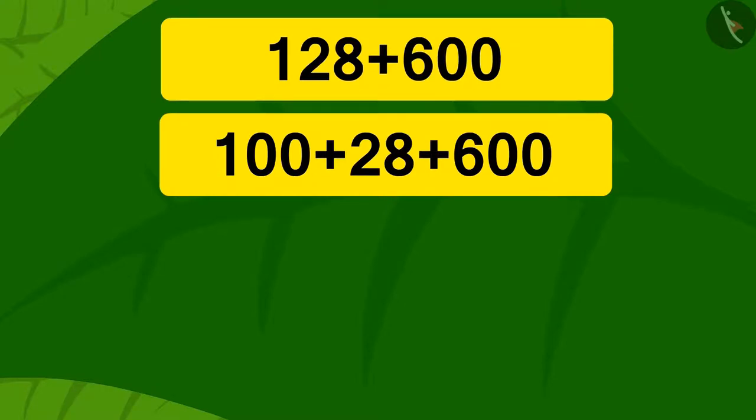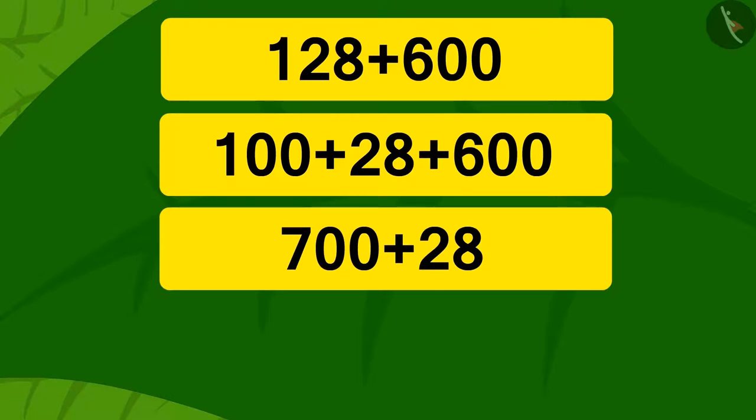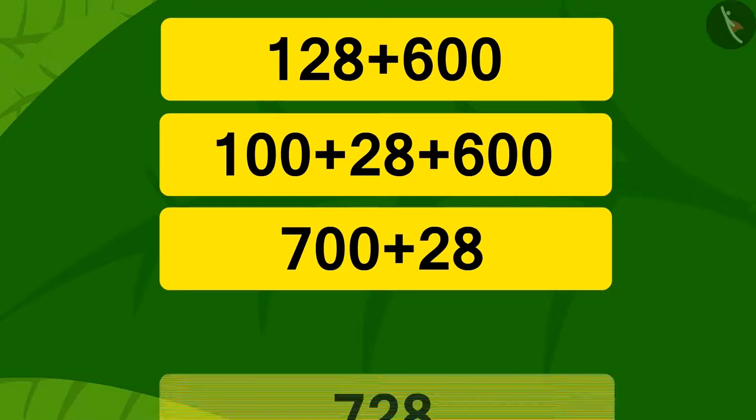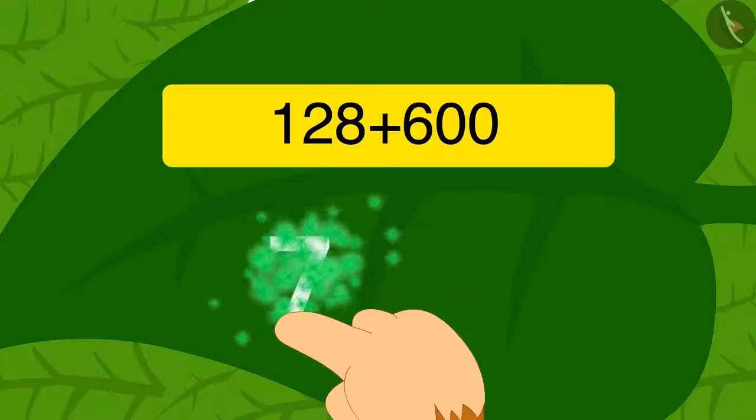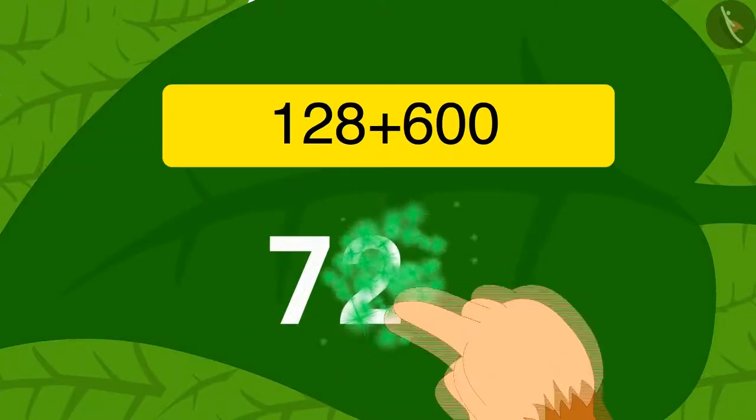Now with the same process we just learned, we can write 700 by adding 100 and 600. Now it's very easy. If you add 28 to 700, you get 728. Baboon wrote 728 as the answer on the vine leaf, and the vine got smaller by sinking down even further.